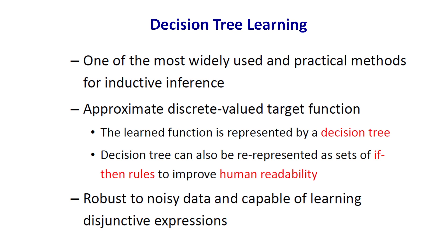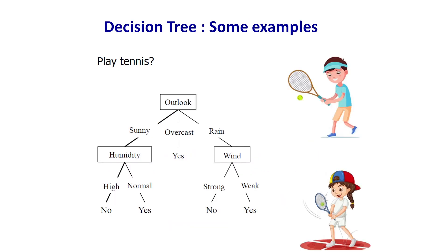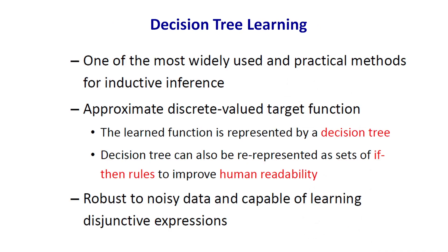A decision tree can also be represented as a set of if-then rules. For example, if it is humid, whether you play depends on high or normal — if it is high, no; if it is normal, yes. It is basically a set of rules. It is very robust to all kinds of noisy data and is capable of learning disjunctive expressions. Disjunction means not connected — the opposite of conjunction. This robustness to noisy data is why you can use decision trees for material science data.